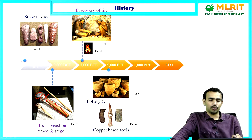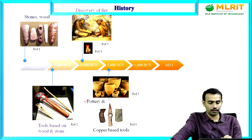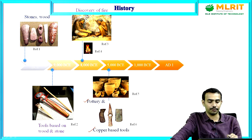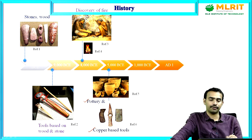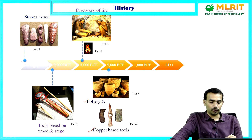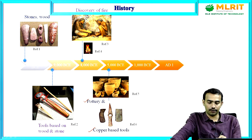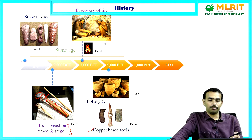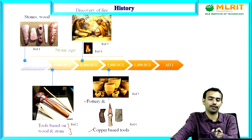Later, we uncovered some metals. The first early metals uncovered from the earth were copper and gold. The moment we discovered copper, we immediately started producing copper-based tools, replacing the tools that were developed based on wood and stone. These were the materials and tools present in the period of the Stone Age.